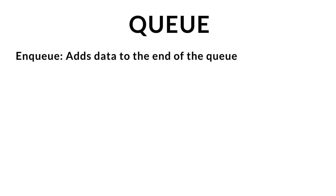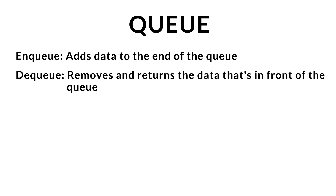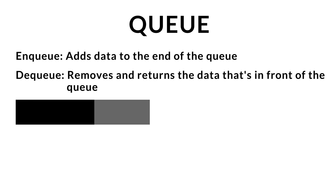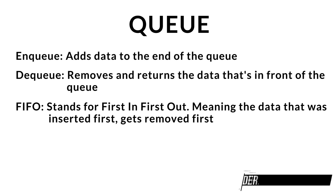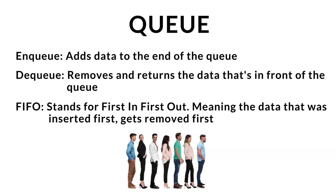A queue has two main methods: a method called NQ, which adds the data to the back of the queue, and a DQ method, which removes and returns the data inserted at the front of the queue. This follows the principles of FIFO, which stands for first in, first out, meaning the data that was first inserted within the queue is the first to get removed. An analogy often used when talking about a queue is a line at a grocery store — the person who is first in line is the person who is first served.